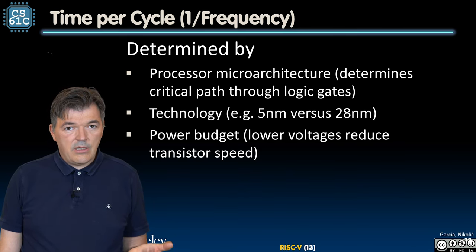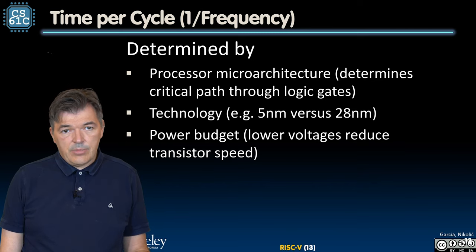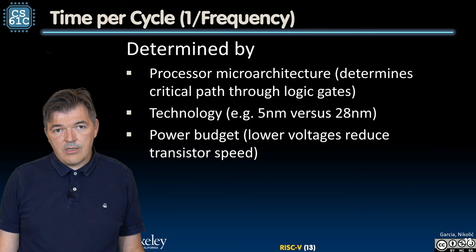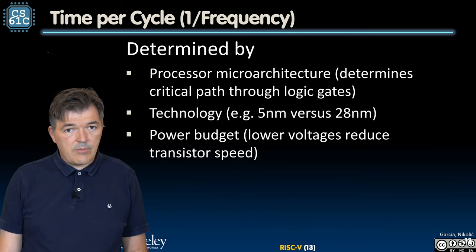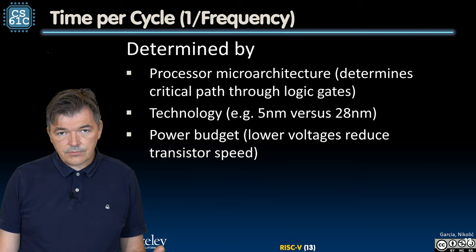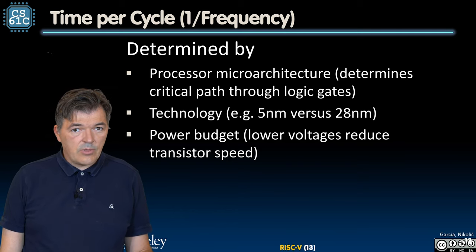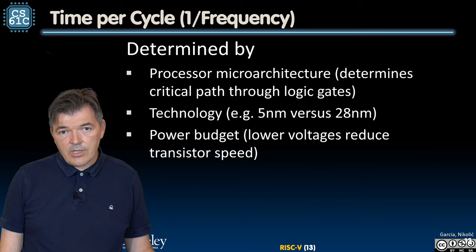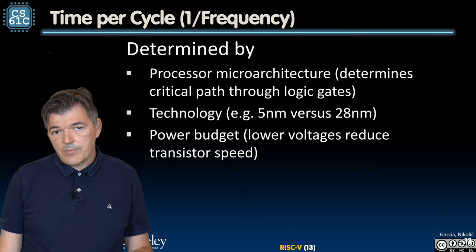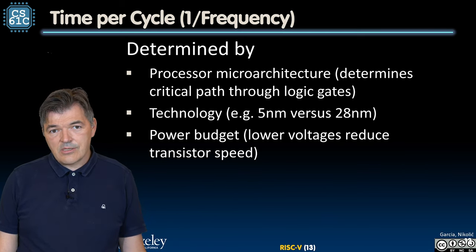Within the same technology, we may have different classes of implementations with different power budgets. For example, desktop processors can run at clock frequencies higher than 4 GHz, but they burn in excess of 100 watts. On the other hand, processors in our cell phones run at around 2 to 2.5 GHz, but have much lower power. This is largely due to the fact that they are often running at a lower supply voltage. Lower supply voltage, as we'll see in the next segment, saves energy but makes things run slower.